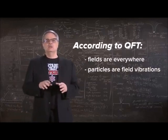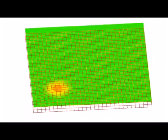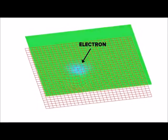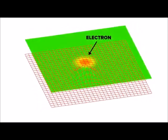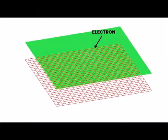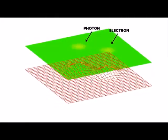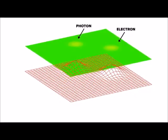The idea can also explain how particles interact. For example, suppose you have an electron moving along. The electron is a localized vibration of the electron field. If the electron emits a photon, then the quantum field theory way of looking at things says that some of the energy of the electron field sets up a localized vibration of a photon field, which then moves away.